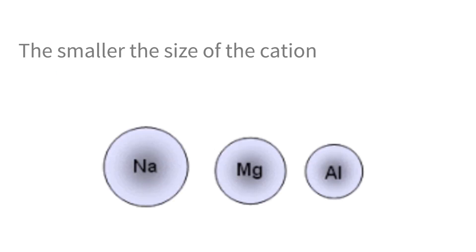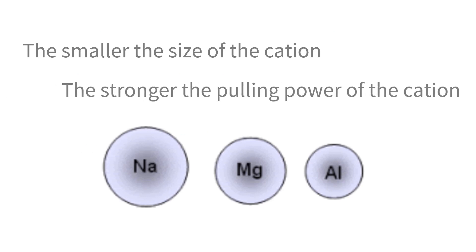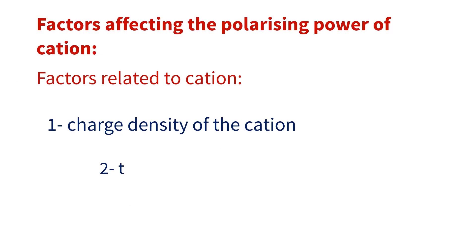The smaller the size of the cation, the denser the charge, which makes the polarization power or attraction power stronger. Other factors related to the cation are the small size and the cation charge. The more the charge, the more the attraction power of the cation.